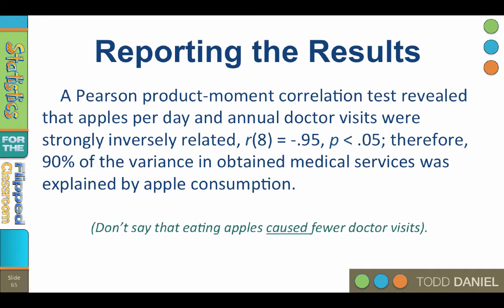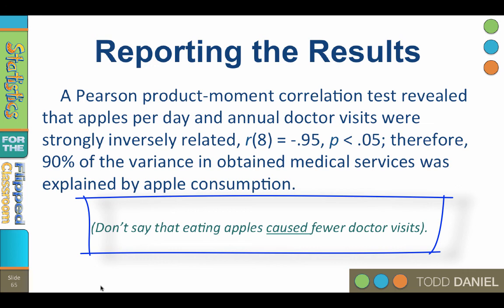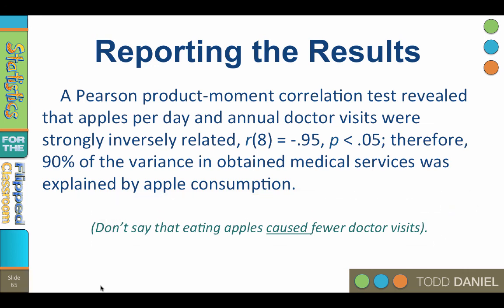Here is how we write up the results: A Pearson product-moment correlation test revealed that apples per day and annual doctor visits were strongly inversely related, r(8) = −0.95, p < 0.05. Increases in apple consumption were accompanied by decreases in physician visits. Therefore, 90% of the variance in obtained medical services was explained by apple consumption. You would not say that eating apples caused fewer doctor visits. We typically do not calculate correlation by hand, but this exercise helps you better understand what we are doing when we calculate correlation using SPSS.